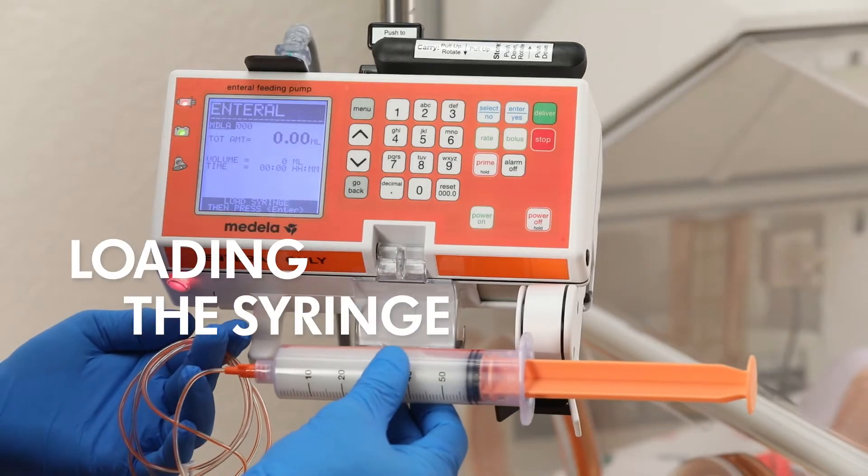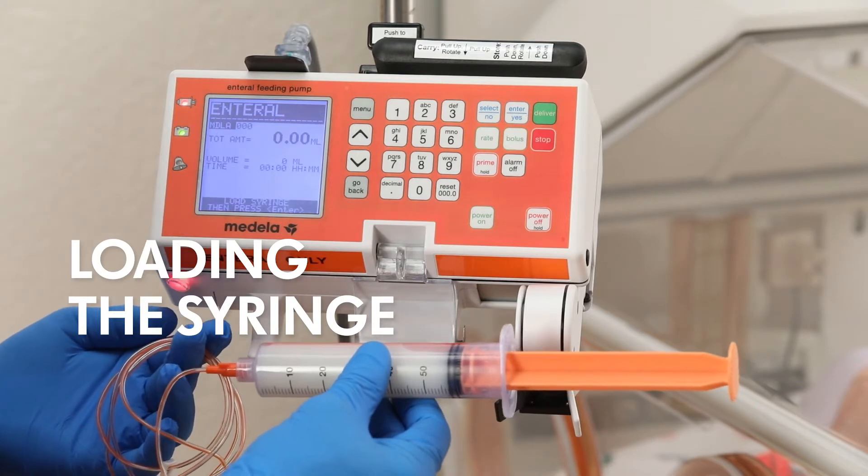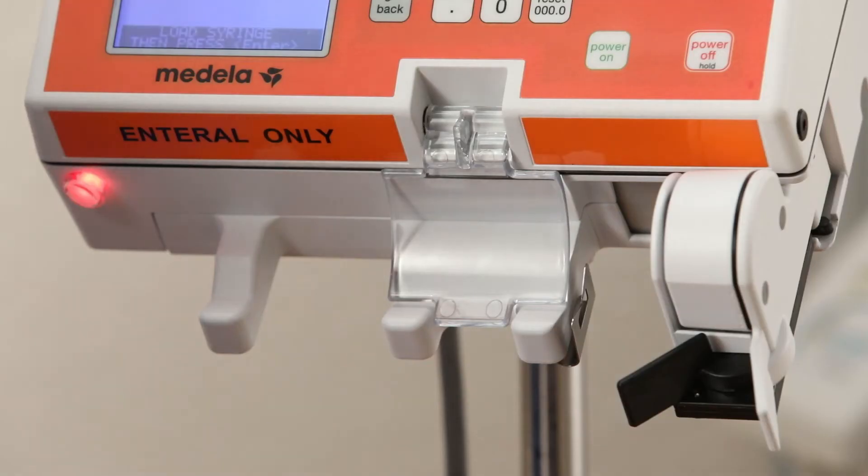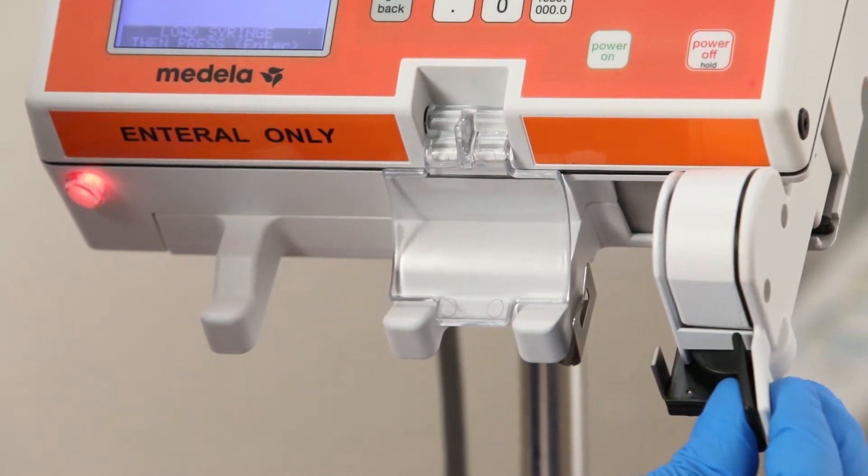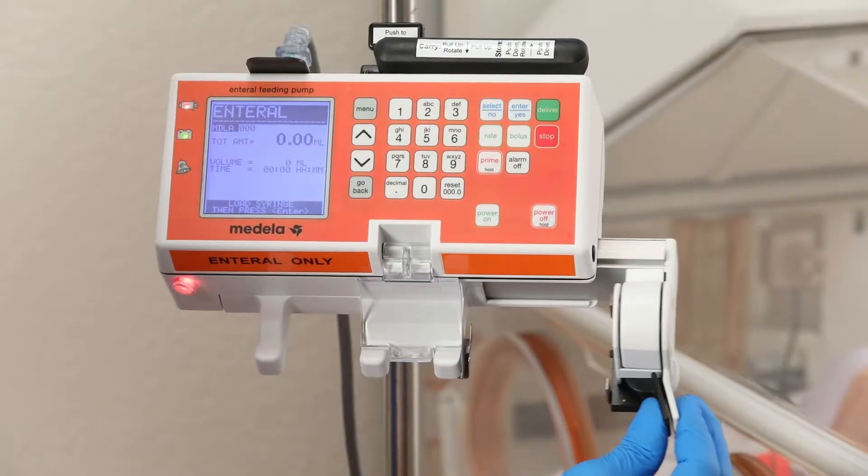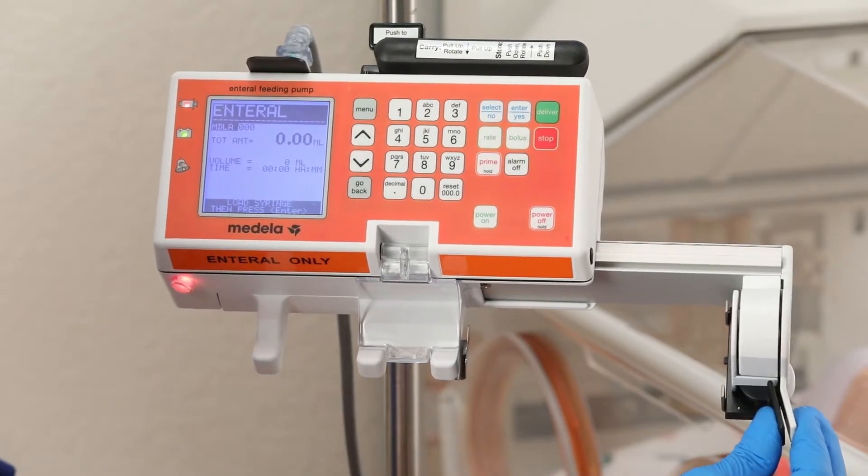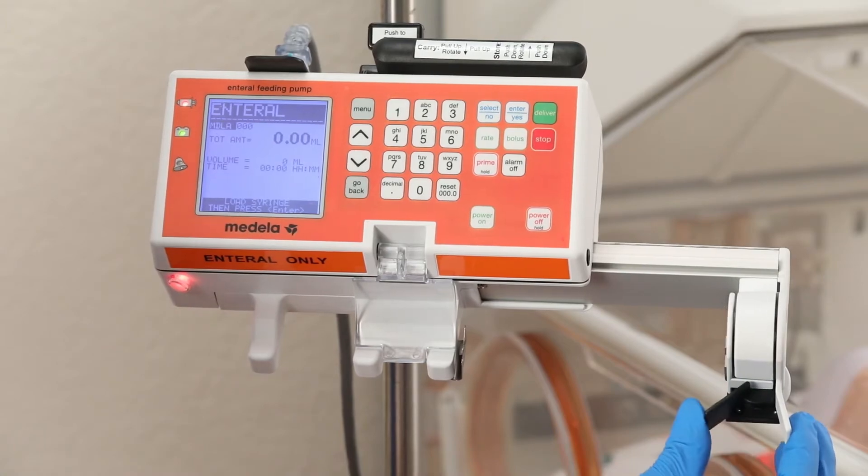Ensure you have securely connected the set before loading the syringe on the pump. To load the syringe, squeeze the black clutch lever toward the white tab. Hold the black clutch lever and the white tab tightly together to release the clutch. Slide the syringe driver to the right until it reaches the end of its travel and release the clutch lever.